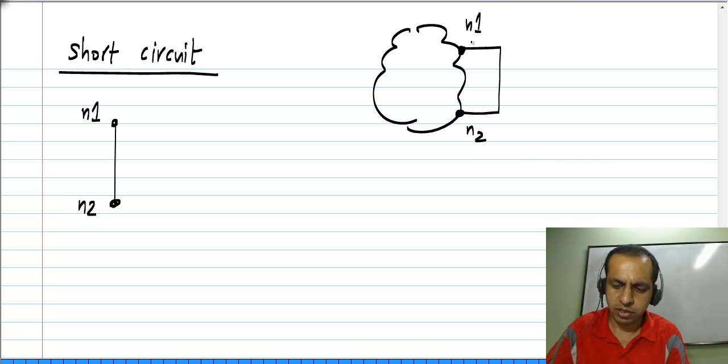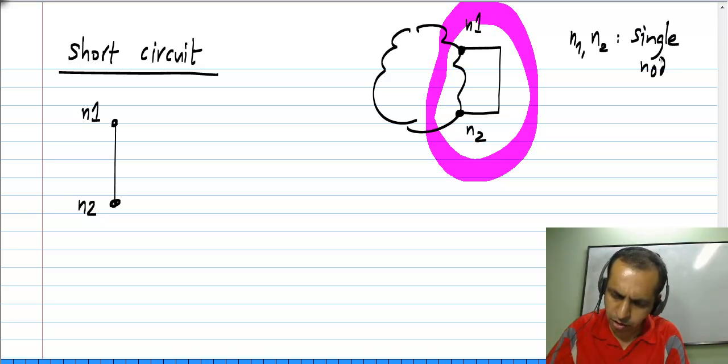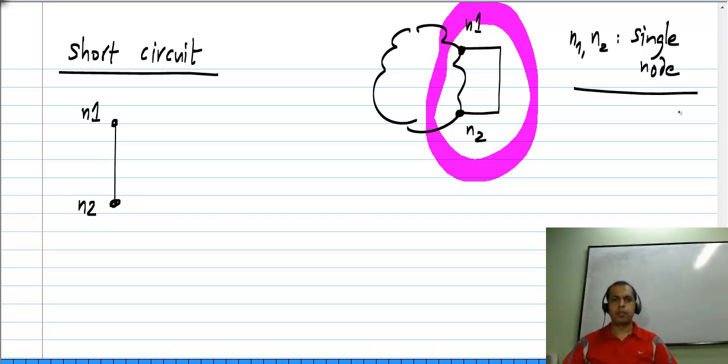There are many ways to deal with this. Firstly, one thing we can do is not treat these as two separate nodes, but treat them as a single node. That is always possible, we do not even consider two separate nodes, but many times while in the course of analysis we would have considered two separate nodes, and there happens to be a short circuit between them.